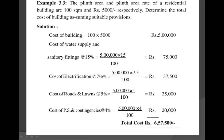Next provision: cost of roads and lawns at 5%. Assuming this provision, we take 5%. So cost of roads and lawns equals cost of the building multiplied by 5 divided by 100, equal to 25,000 rupees.